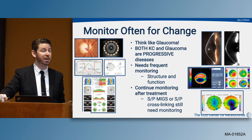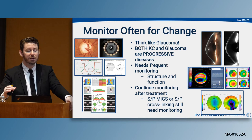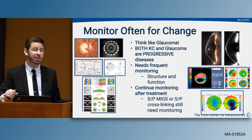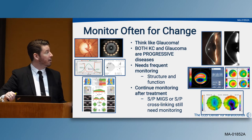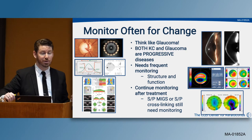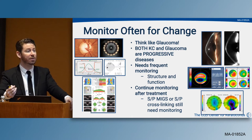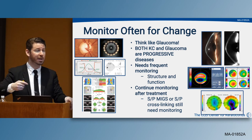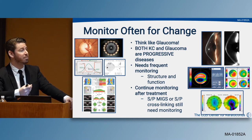We want to monitor often for changes. Think of keratoconus more like glaucoma rather than a purely refractive disease—both are progressive diseases requiring frequent monitoring of structure and function. In glaucoma we monitor the optic nerve, OCT, and visual fields; in keratoconus we monitor curvatures, elevations, thickness, and aberrations over time. Just as we wouldn't stop monitoring a glaucoma patient after a MIGS procedure, we shouldn't stop monitoring after corneal collagen cross-linking, as progression can still occur.